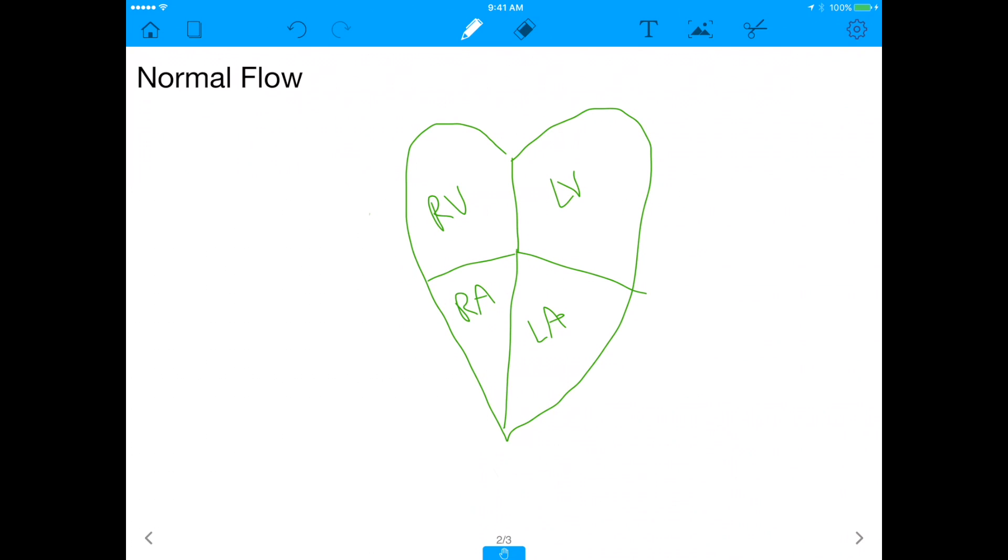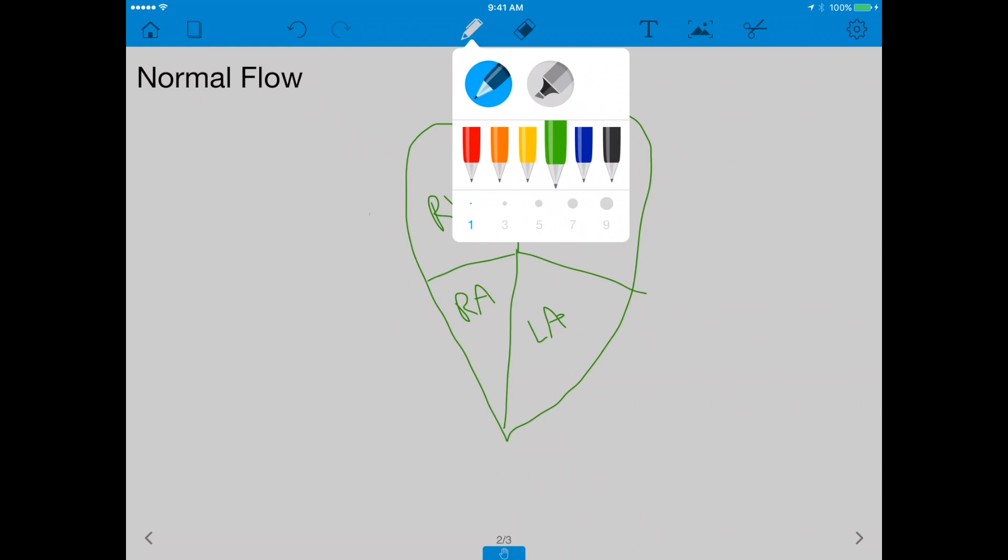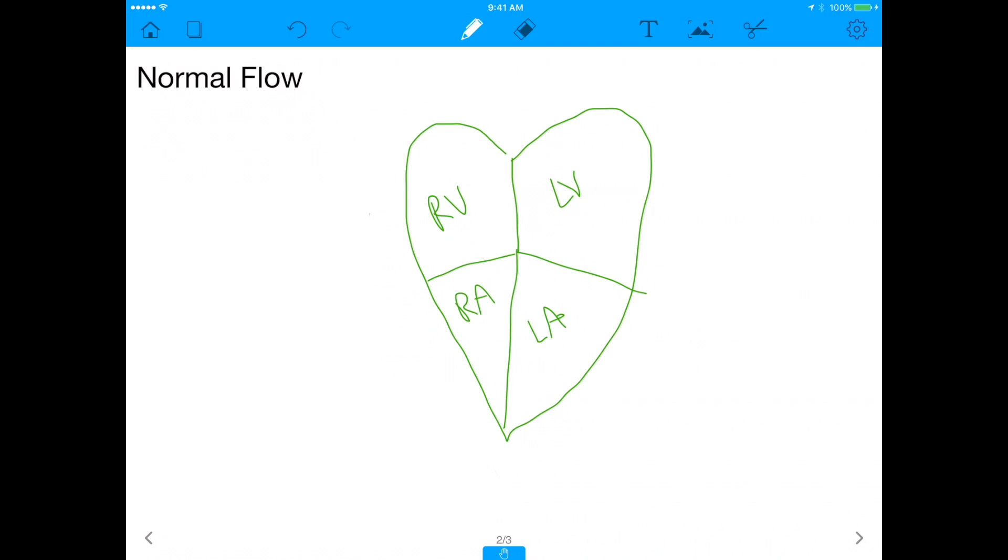Okay, so the normal flow of the heart, there are two main flows. And in this example, the reason why I started using the green is because I'm going to draw red blood as oxygenated and blue blood as non-oxygenated. So just remember, red is oxygenated and blue is not oxygenated. Let me erase this, and this is O2.